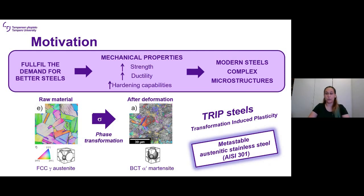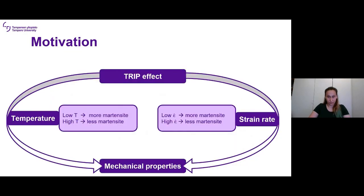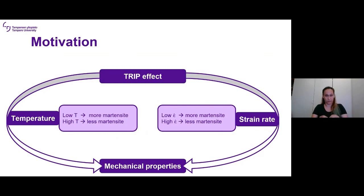This is the case for the TRIP steels. TRIP stands for Transformation Induced Plasticity. In these steels, the soft and deformable austenite transforms into a harder and stronger martensite. This is the main focus of my thesis — I'm working mostly with a metastable austenitic stainless steel that undergoes this phase transformation. The TRIP effect is affected by both temperature and strain rate: increasing the temperature results in a much reduced TRIP effect with less martensite forming, and the same happens when we increase the strain rate.